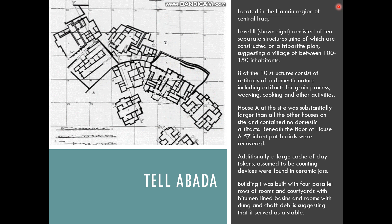Another important site in the conceptualization of the social organization of Ubaid Mesopotamia in Iraq is the site of Tal Abadah. What we can see here is a small agricultural village of maybe about 100 to 150 inhabitants living in a centralized location.